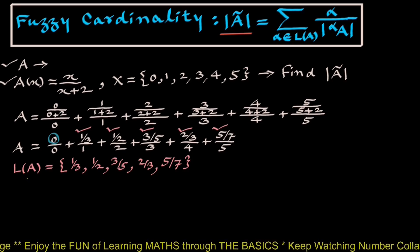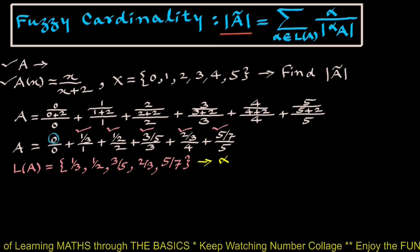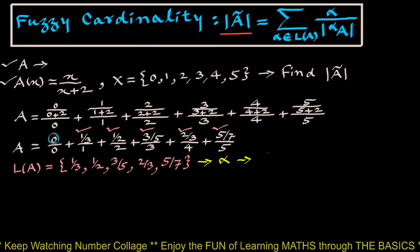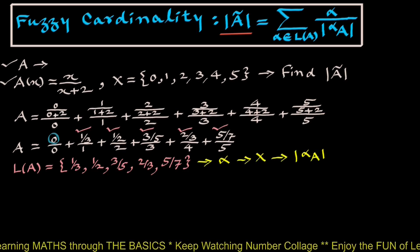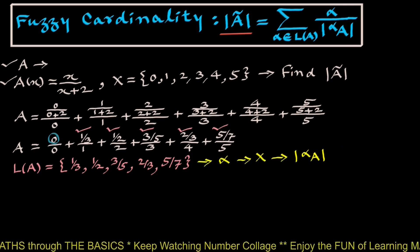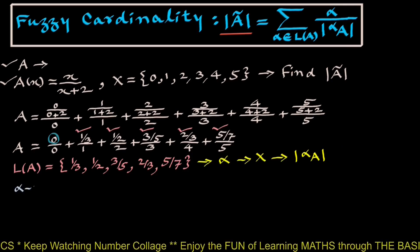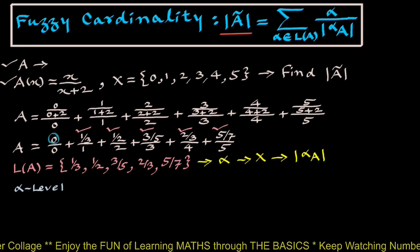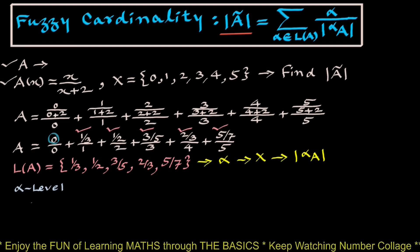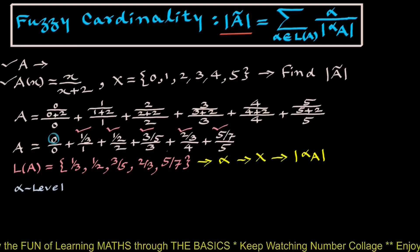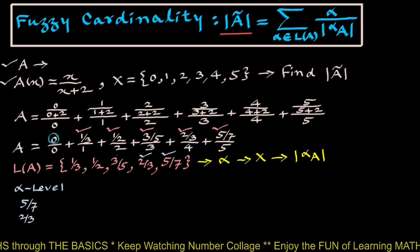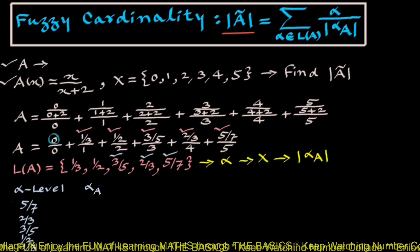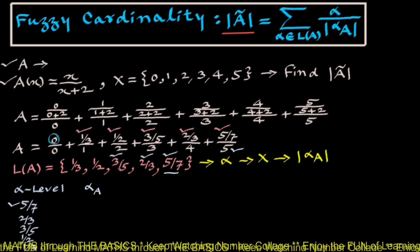The members of level set A are the values of alpha, and we count how many elements of X have scalar cardinality of alpha cut A. We prepare a table with the first column as the alpha level, written in decreasing order. So first the greatest, 5/7, then next 2/3, then 1/3. Corresponding to alpha equals 5/7, alpha cut A contains this element {5}.